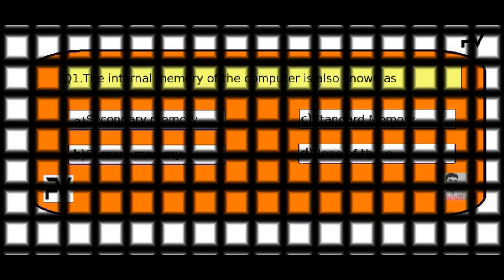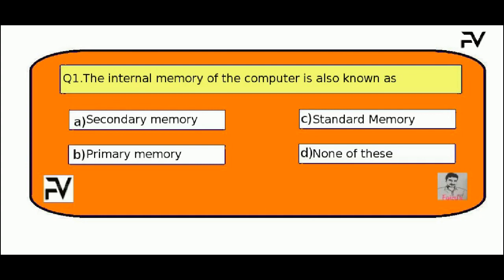Question No. 1. The internal memory of the computer is also known as: Option A, secondary memory; Option B, primary memory; Option C, standard memory; Option D, none of these.